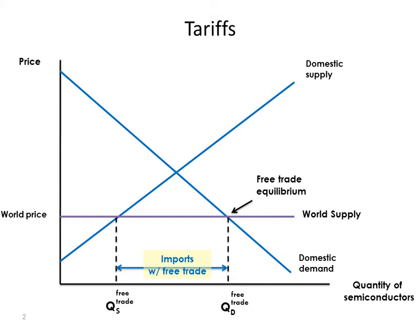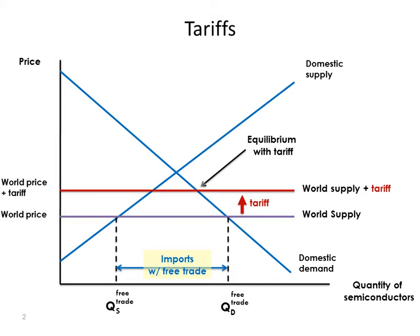If a country can buy as much as it wants at the world price, the free trade equilibrium has this quantity demanded. This quantity will be supplied domestically. The difference between the quantity demanded and the quantity supplied domestically is imports.